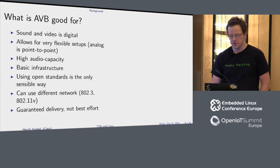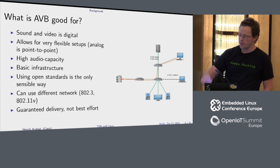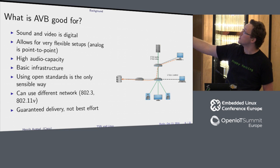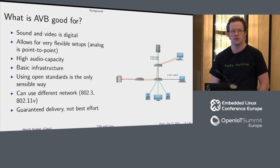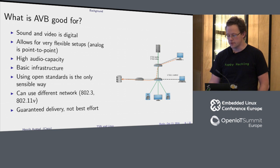At the end of the day, this is basically about building basic infrastructure. If you put audio and video aside, this is all about giving you the ability to send something time-critical over the network without worrying about losing frames or jitter. And once you start looking at infrastructure, you realize that open standards is the only sensible way to go. AVB is guaranteed delivery, so you can actually mix it with other traffic. You can do a massive file transfer across the same network link without having to worry about losing frames or having glitches in the audio.